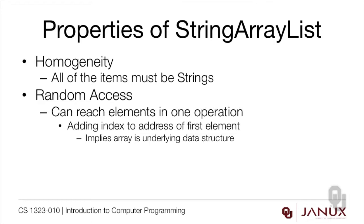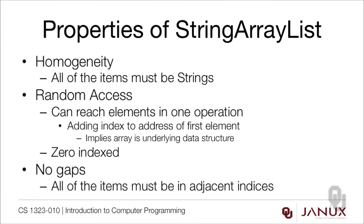There are other data structures and you'll see them next semester. We're also going to zero-index things — this isn't critical, but it's consistent with how things are done in Java, so it's the right way to do them. And there should be no gaps; all elements should be in adjacent indices. This is one of the ways ArrayList differs from arrays — arrays could have gaps, but we can't with ArrayList and we want to maintain that property.